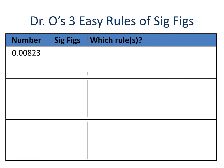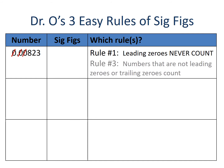Here we have 0.00823. The first thing we see is leading zeros — rule number one says leading zeros never count. There is a decimal, but rule number one doesn't concern itself with decimals; it simply says leading zeros never count. Now we're left with the 8, the 2, and the 3. Rule number three says these are our important numbers, so 0.00823 has three significant figures.